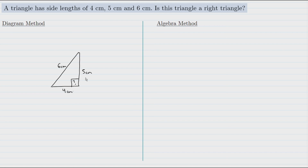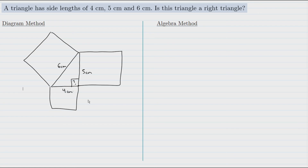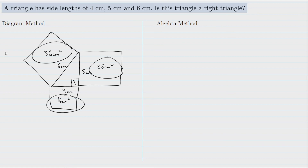Let's see if it works for the Pythagorean theorem. The theorem is all about the area of squares built on the sides of the triangle, so I'll draw those squares and find their areas. The square on the side of 4 centimeters has an area of 4 times 4 = 16 centimeters squared. The square on the 5 centimeter side has area 5 times 5 = 25 centimeters squared. The square on the 6 centimeter side has area 6 times 6 = 36 centimeters squared. If this was a right triangle, the two smaller areas would have to add up to the bigger area — but that does not happen here. 16 plus 25 is 41, not 36, so the Pythagorean theorem is not satisfied and this cannot be a right triangle.